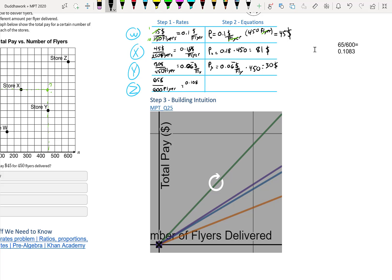So then when we do this math, it's 0.1083 times 450. You get $48. So that would be pay Z, which is 0.1083 times 450. That's $48.74.